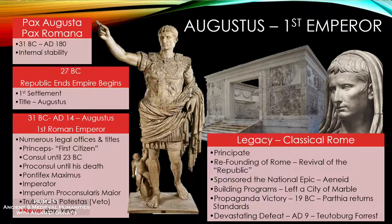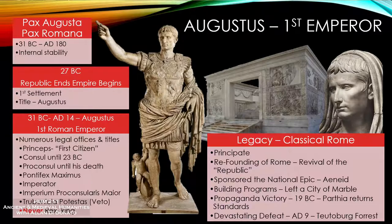He instituted an official fire brigade for the city of Rome, where previously these things were in the hands of private officials like Crassus, who ran his own fire department. Government officials are generally picked based on ability and competence, not so much class anymore — that's an important shift. He is a master of propaganda, as we saw briefly when we talked about his conflict with Mark Antony and how he depicted himself.